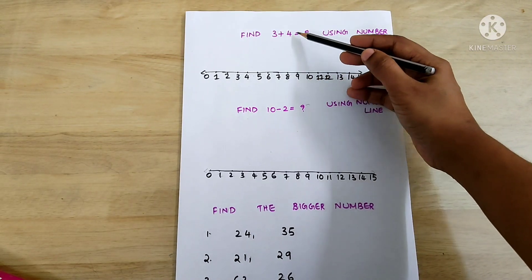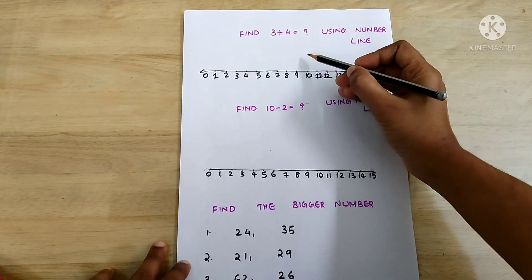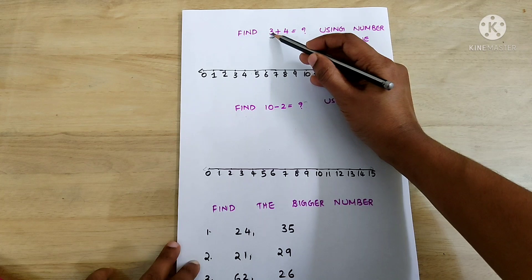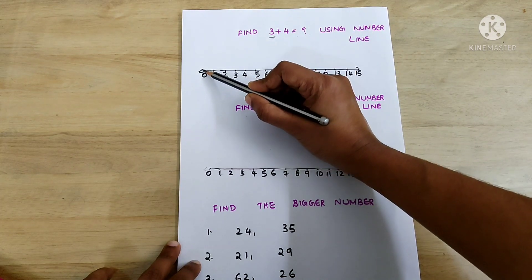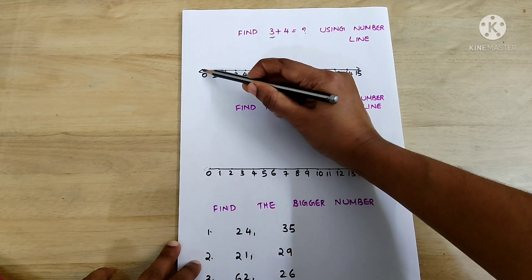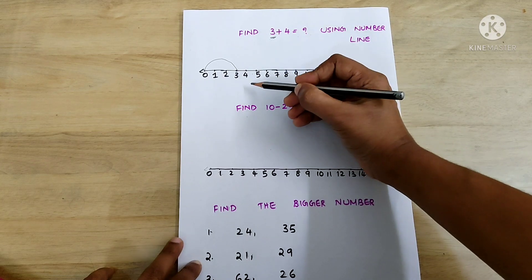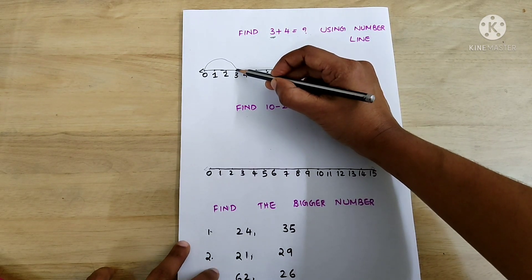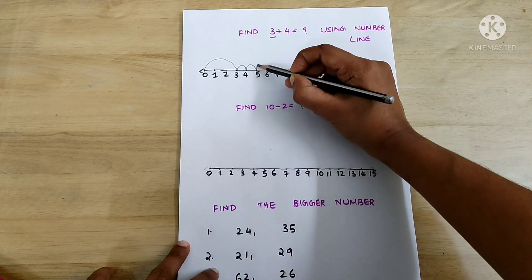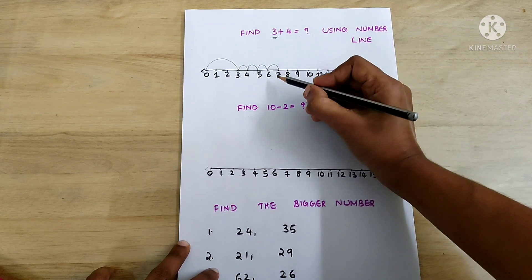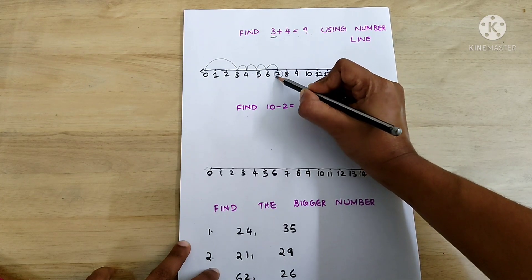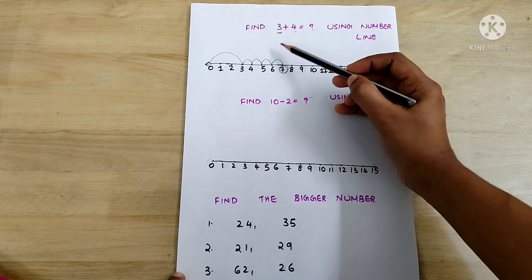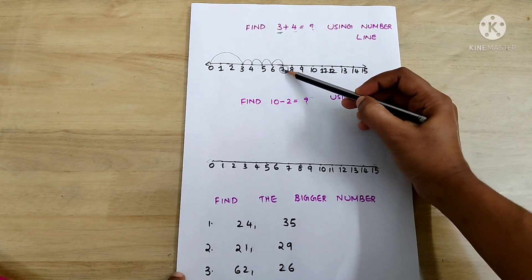Find 3 plus 4 using a number line. In order to find the answer, first we have to jump from 0 to the first number, that is 3. So we start from 0 and jump to 3. Now we have to add 4 — start from 3 and jump 4 times: 1, 2, 3, 4. Now we stand at number 7. So number 7 is the answer. First jump from 0 to the first number and move the remaining steps forward, then we will get the answer.